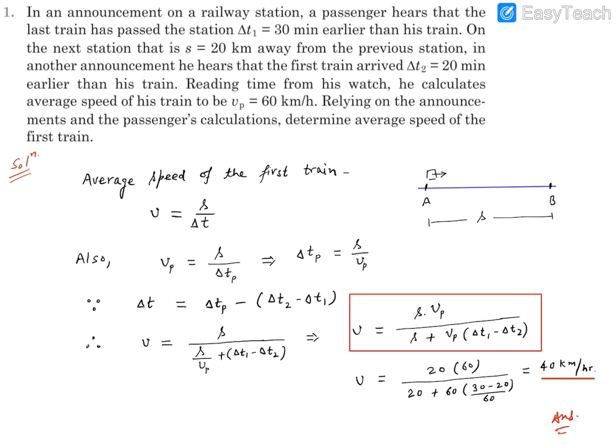Let me write that in equation format. Delta T, the time taken by the first train, will be Delta Tp, the time taken by the person's train, minus Delta T2 minus Delta T1.